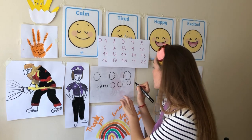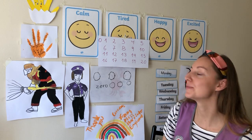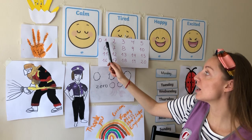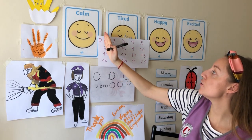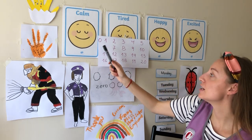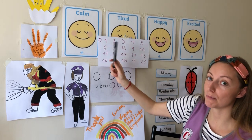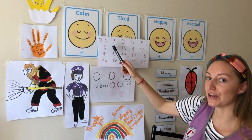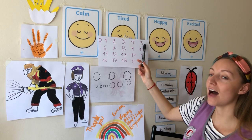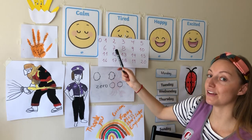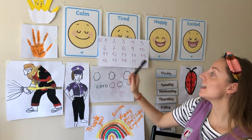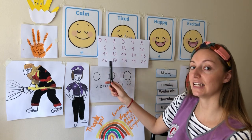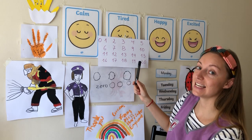Zero — when we have our list of numbers, we start with number one, but if we have no numbers then we have zero. Zero is kind of like a number before number one. We start with nothing at all, and then we go one, two, three, four, five, six, seven, eight, nine, ten, eleven, twelve, thirteen, fourteen, fifteen, sixteen, seventeen, eighteen, nineteen, and twenty.